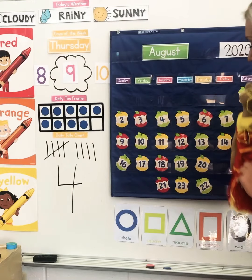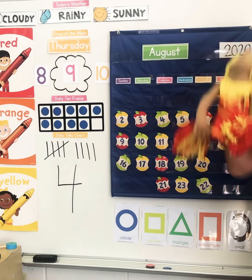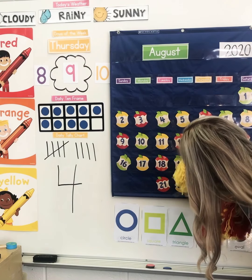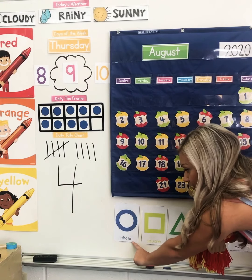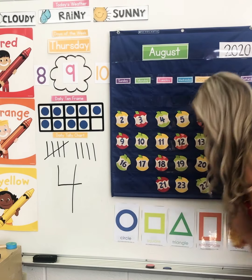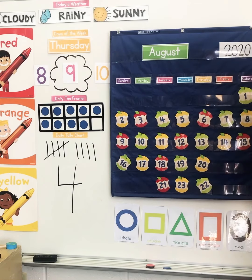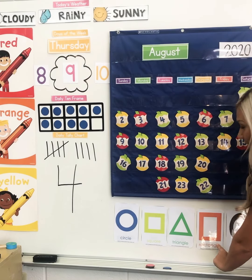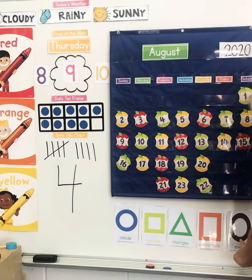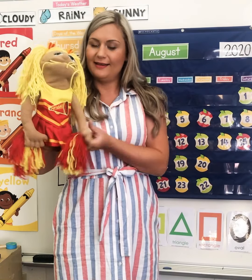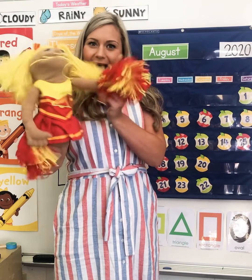Now, let's review our shapes. We have a circle, a square, a triangle, a rectangle, and an oval. That's our calendar for today. Bye!